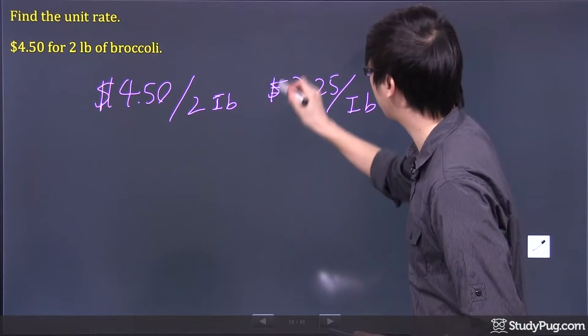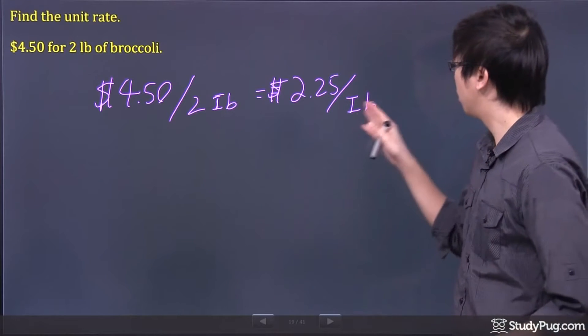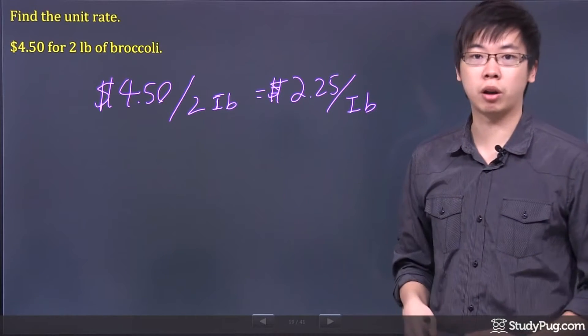So, that's your money sign right here. The unit rate for this question is 2.25 dollars for every pound of broccoli.